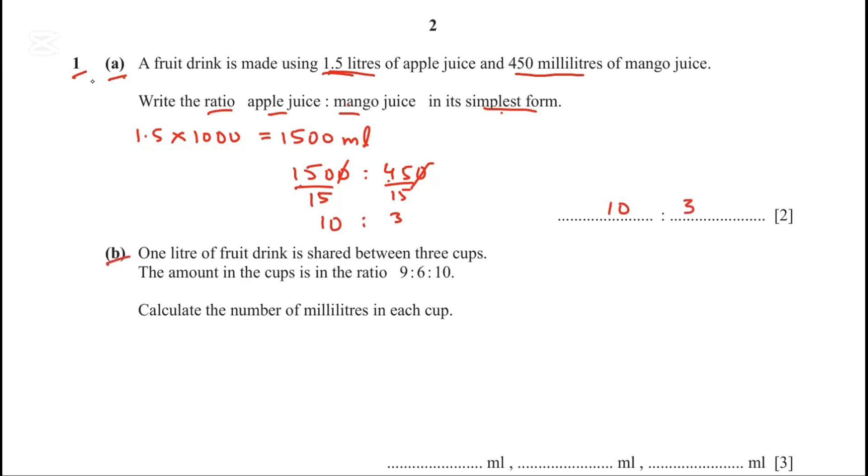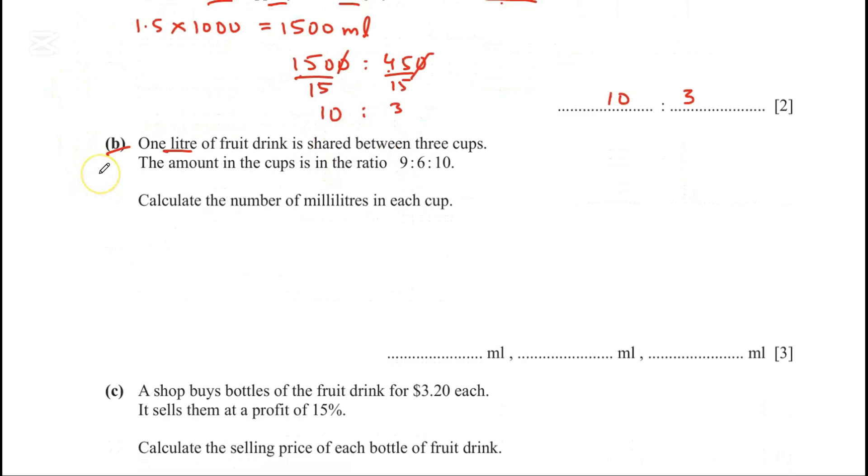Question part B. One liter of fruit drink is shared between three cups. The amount in the cups is in the ratio 9 to 6 to 10. Calculate the number of milliliters in each cup.